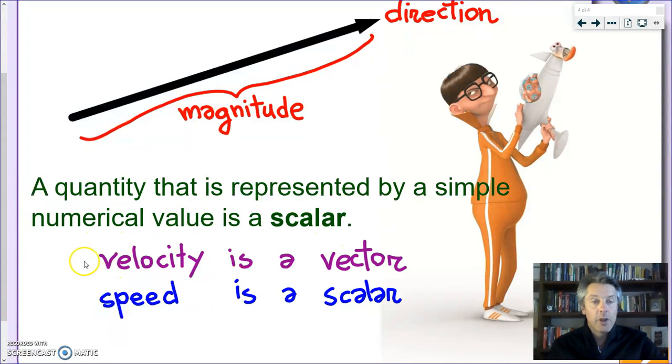So, to wrap everything up, we know that velocity is a vector, and we're going to see more examples of vectors, and speed is a scalar. And this guy over here, well, he will be important for our story later on. But just to tell you, his name is Vector. So, for now, that's all. Goodbye from Mr. Boscherini.